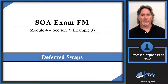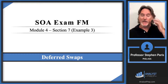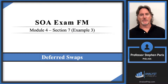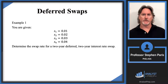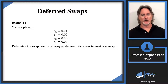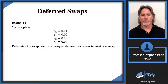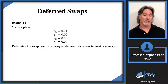In this video we're going to look at a couple of examples on deferred swaps. You'll see what I mean by deferred swaps as we get into the example, so let's get started. This first example gives us a term structure of interest rates — these spot rates: one-year spot rate, two-year spot rate, and so forth. The question is: determine the swap rate for a two-year deferred two-year interest rate swap.